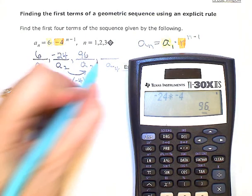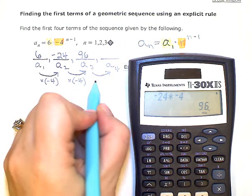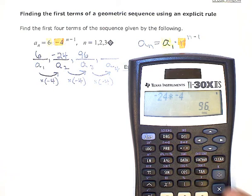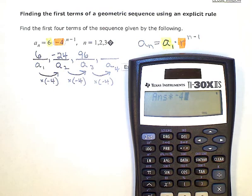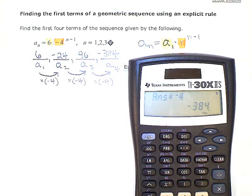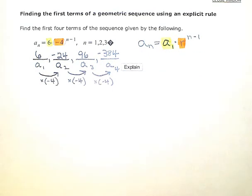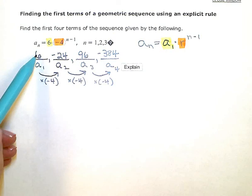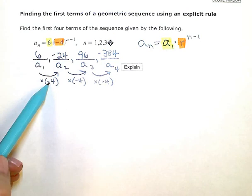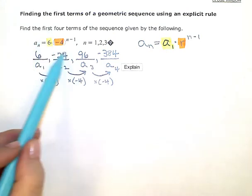Multiplying by negative 4 one last time gives me negative 384 for my fourth term. I got this information, my first term value 6 and what I multiply by every time, just by looking at my formula here.